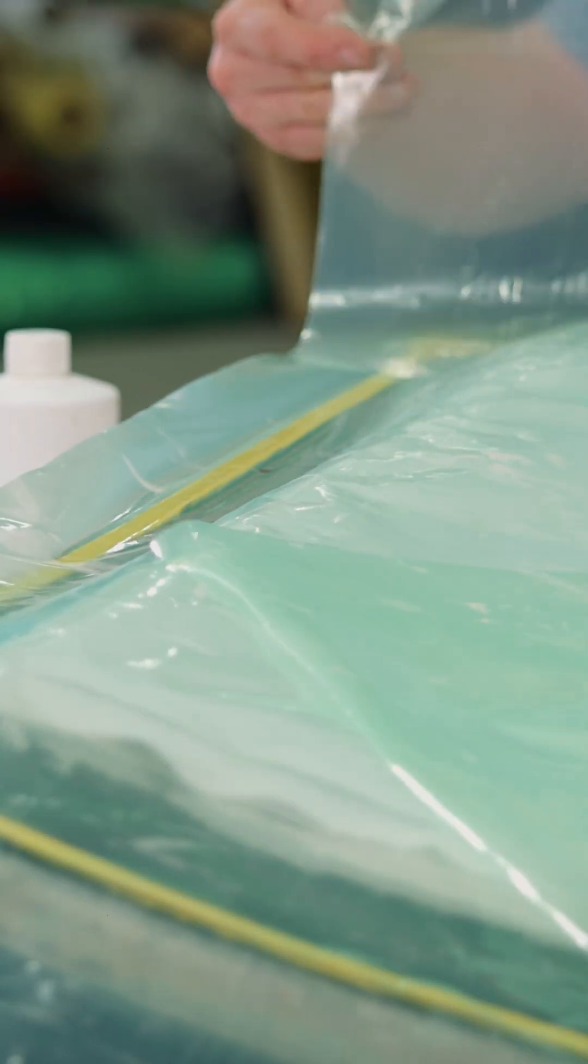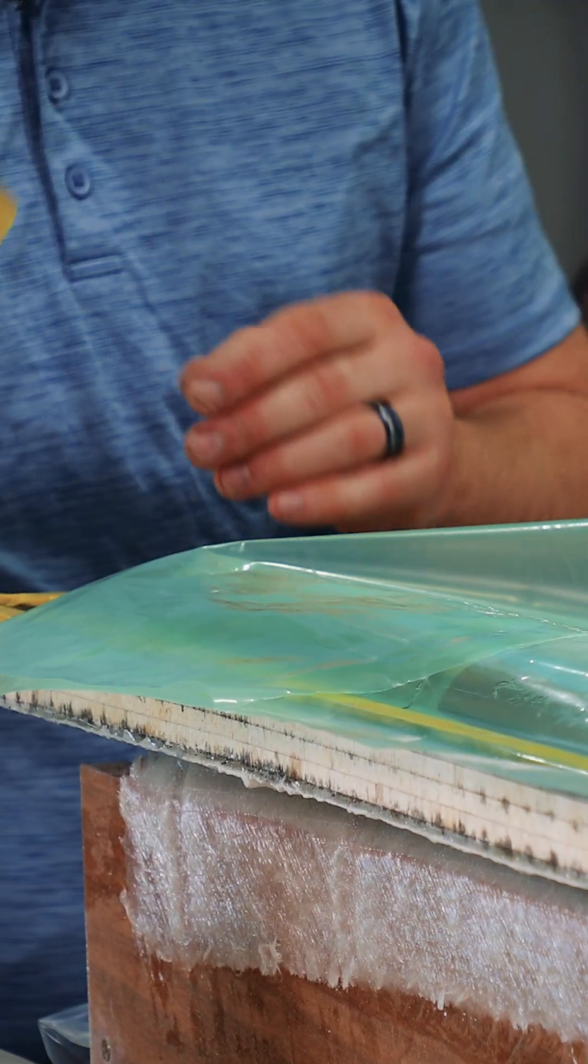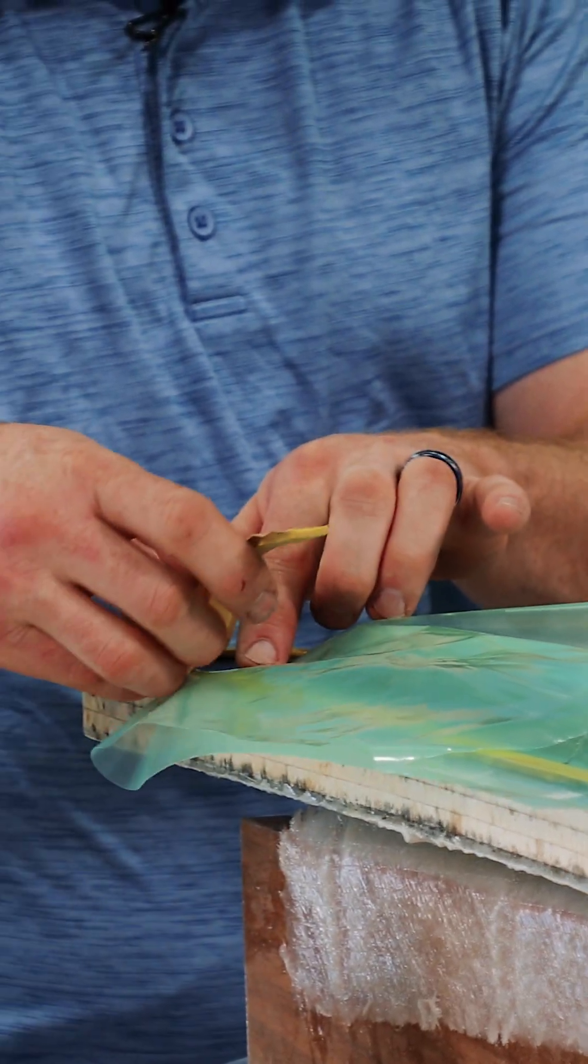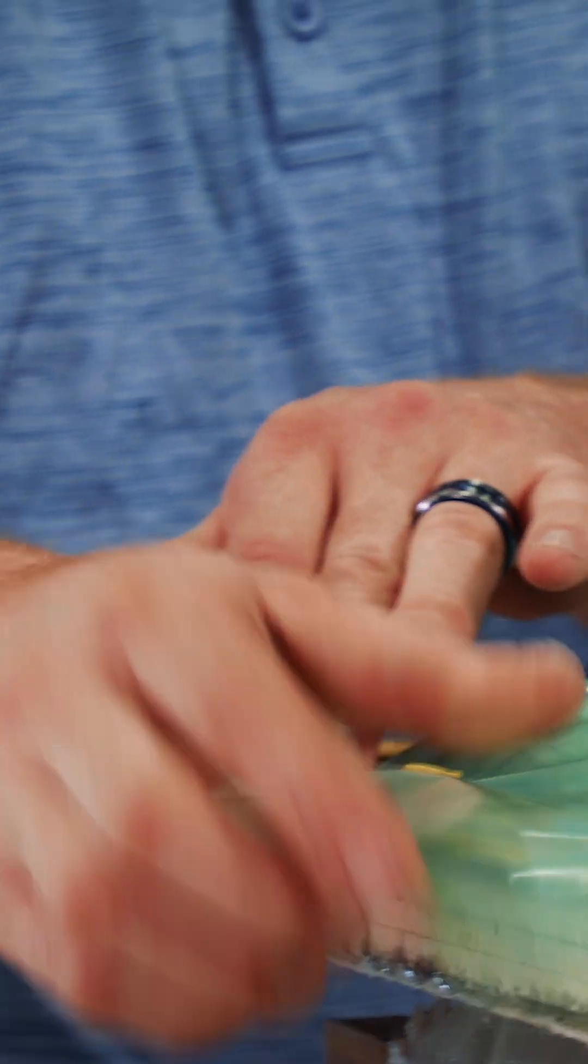I'll actually take the bag and fold it back on itself. When I install the sealant tape, I like to go down onto the surface about a half an inch and put it right back up onto the bag film.